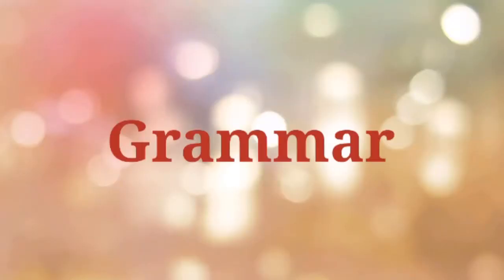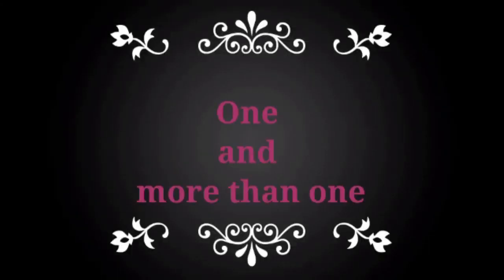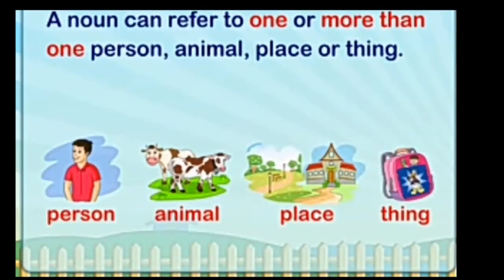Dear students, today we are going to learn one grammar topic: one and more than one. A noun can refer to one or more than one person, animal, place, or thing.